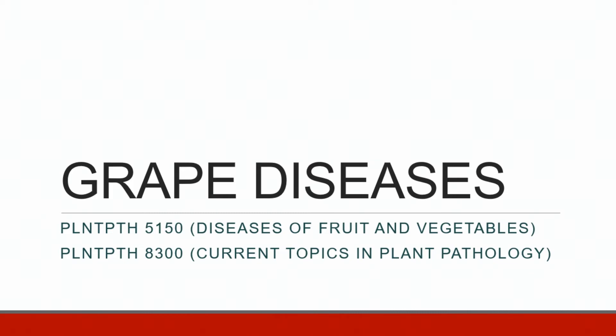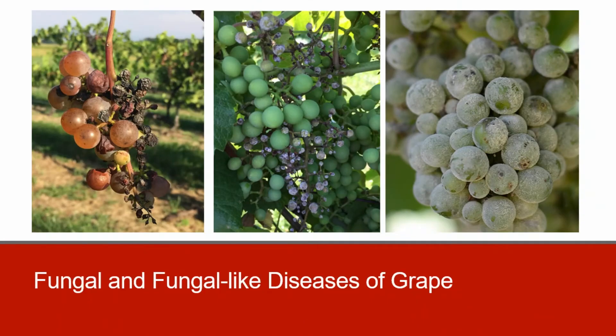Cold injury and diseases are the top two concerns of growers in the state. Black rot, downy mildew, and powdery mildew are three major diseases of grape that can cause substantial yield losses each year. The first image shows black rot, the second image shows downy mildew, and the third image shows powdery mildew on grape clusters. Other fungal diseases that affect grape include anthracnose, phomopsis, and botrytis gray mold.